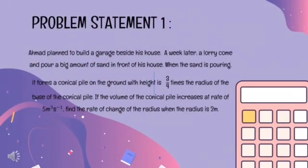Problem Statement 1: Ahmad planned to build a garage beside his house. A week later, a lorry came and poured a large amount of sand in front of his house. When the sand was poured, it formed a conical pile on the ground with height equal to 3/4 times the radius of the base. If the volume of the conical pile increases at a rate of 5 cubic meters per second, find the rate of change of the radius when the radius is 2 meters.